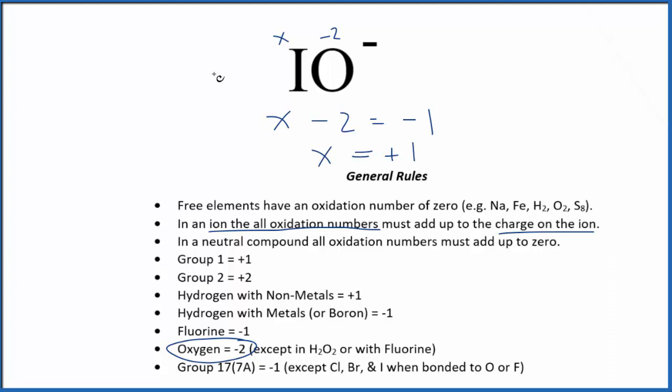X equals a positive 1. So the I in IO⁻, the hypoiodite ion, that's going to have an oxidation number of plus 1.